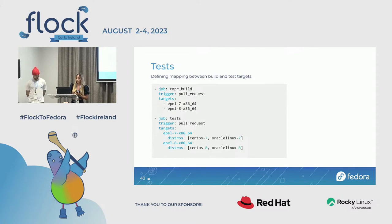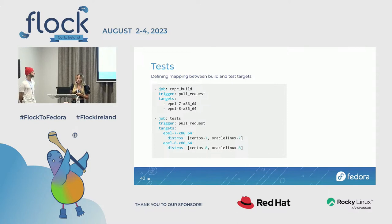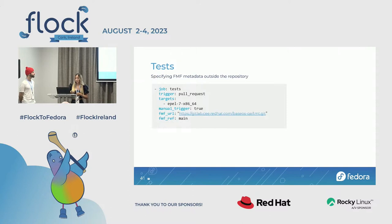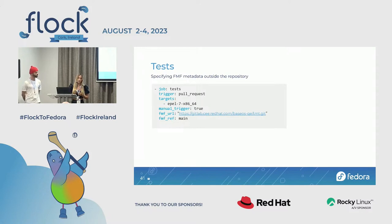There's also another use case: defining custom mapping between your build and test targets. For example, if you have an RPM build job with COPR targets for EPEL 7 and EPEL 8, you can define mapping so that builds with target EPEL 7 run on CentOS 7 and Oracle Linux 7. One-to-one or one-to-many mappings are supported. Additionally, if your FMF metadata is in a different repository than your code, you can specify the FMF URL pointing to that other repository and also specify an FMF ref, and Packit will forward this to Testing Farm.